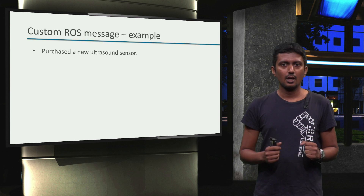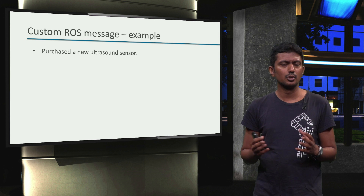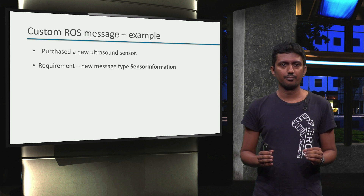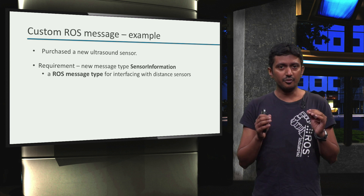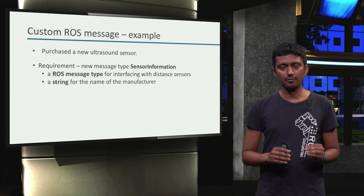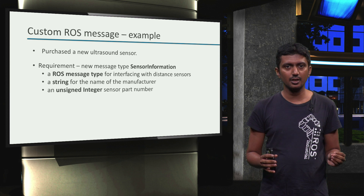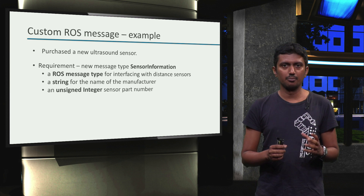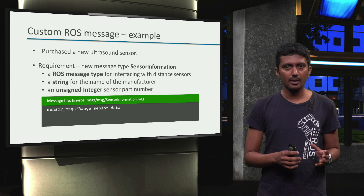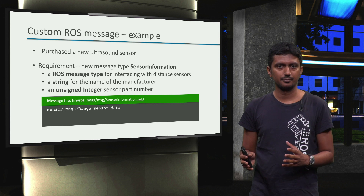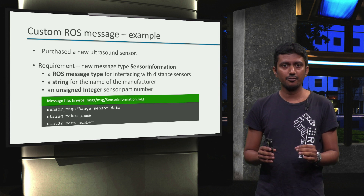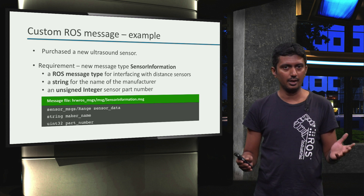Let us now look at an example. We have purchased a new ultrasound sensor for an application where we want to do some distance measurements. Our requirement is to define a new message type called SensorInformation, composed of a field for the ROS message type for interfacing with distance sensors, a string field for manufacturer name, and an unsigned integer field for the sensor part number. This is implemented in the SensorInformation.msg file as shown in this code snippet: the first line defines the sensor message type provided by ROS, the second line defines the string type for manufacturer name, and the third line defines the unsigned integer type for the sensor part number.